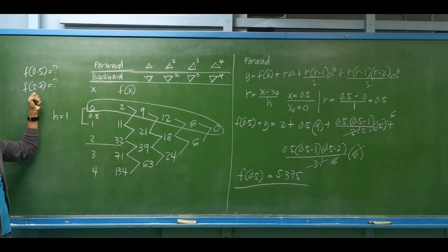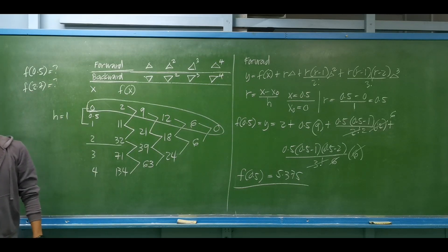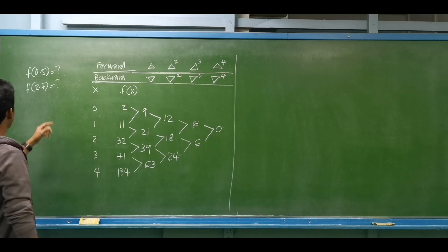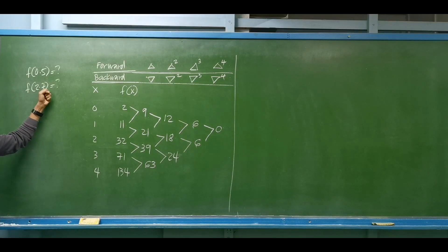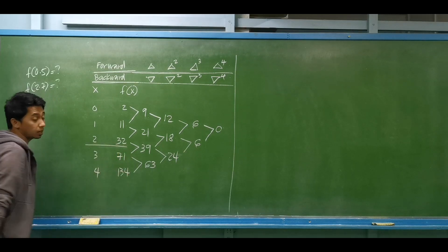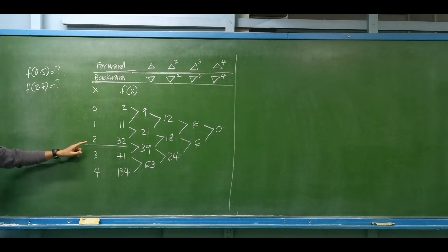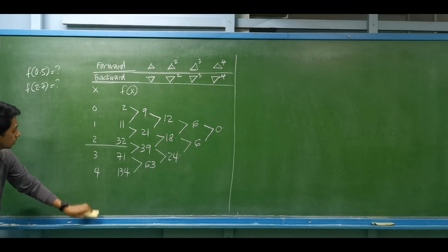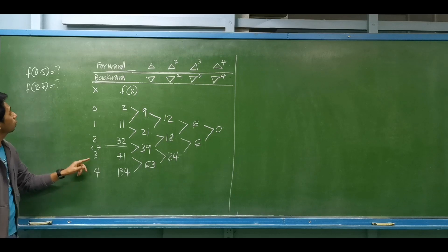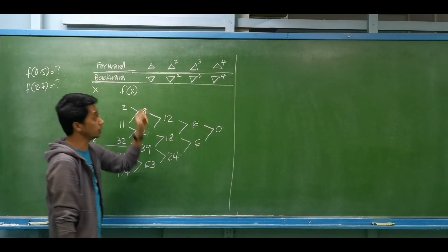Next, let us determine the equivalent of f(2.7). As we observe, 2.7 is after our middle value and close to 3, so 2.7 is near the end of our data. Therefore we have to use the backward method.